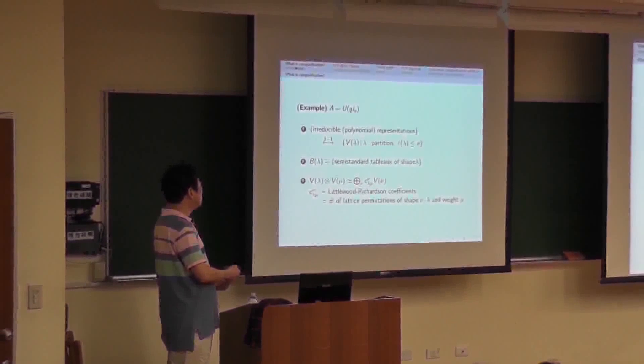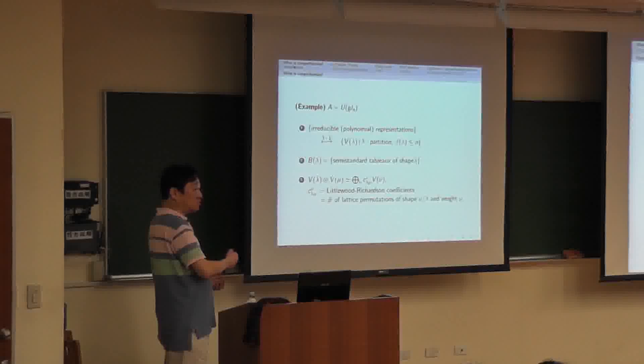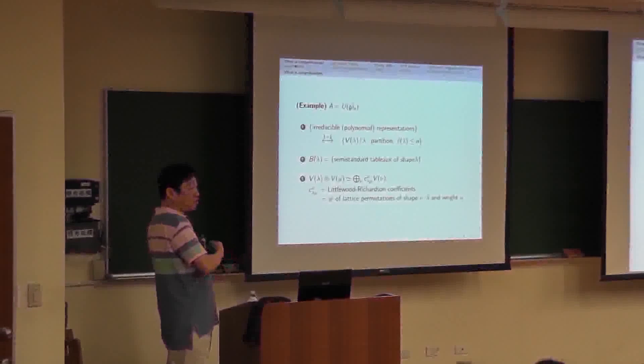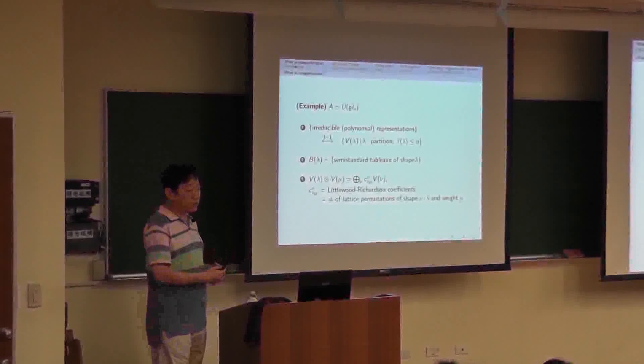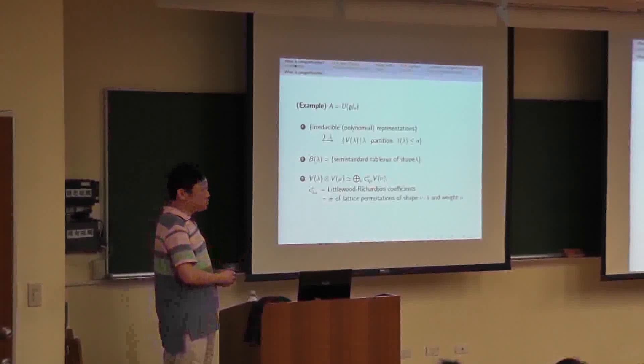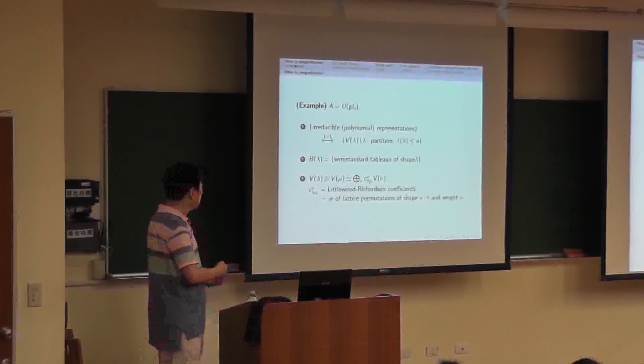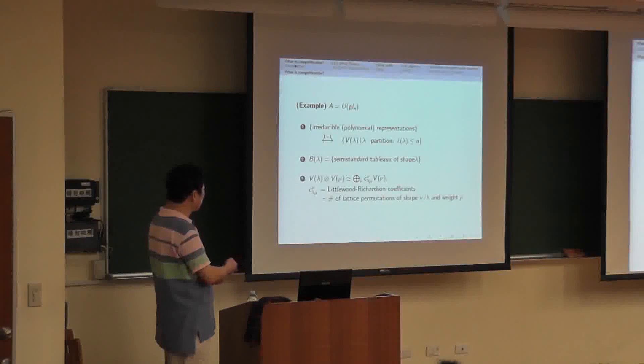Consider the number of semi-standard tableau of shape lambda. Given a partition, consider the tableau in which the entries are weakly increasing in each row and in each column the entries are strictly increasing.